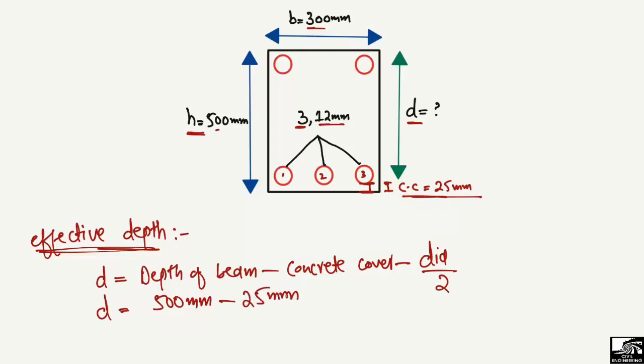So the formula becomes: 500 minus 25 minus diameter of bar divided by 2. The bar used here is 12 millimeter diameter, so 12 divided by 2. The effective depth is the distance from the extreme top compression zone down to the mid-point of the steel bar. This distance is known as the effective depth D of the beam. So: 500 − 25 − 12/2.